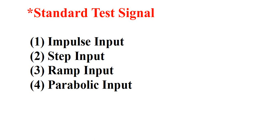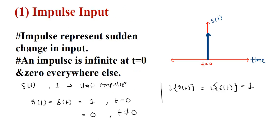Hello everyone, welcome to the Control System Theory. In this video I'm going to explain standard test signals which are given to the control system as an input to analyze the response of the system. There are four types of test signals: the first one is impulse signal, second one is step signal, third one is ramp signal, and parabolic signal. Now we will discuss all the signals in detail.